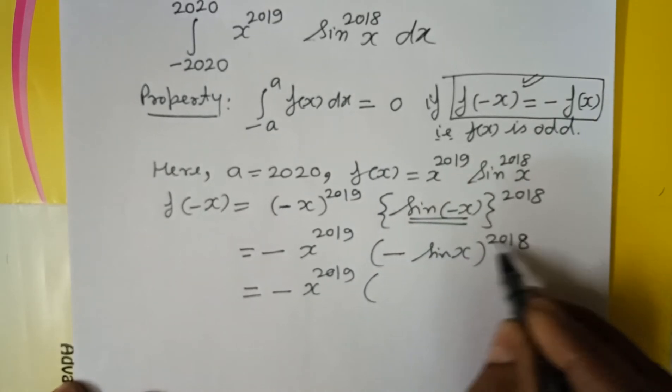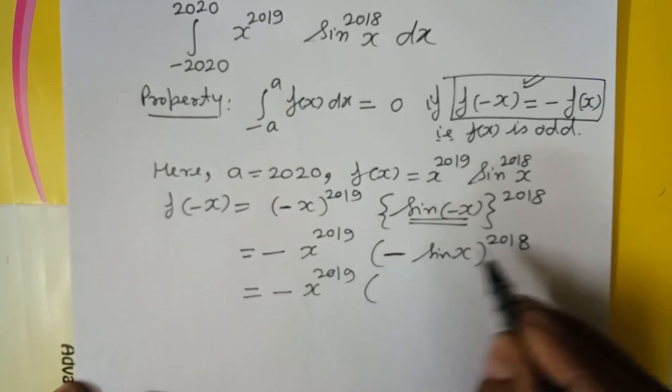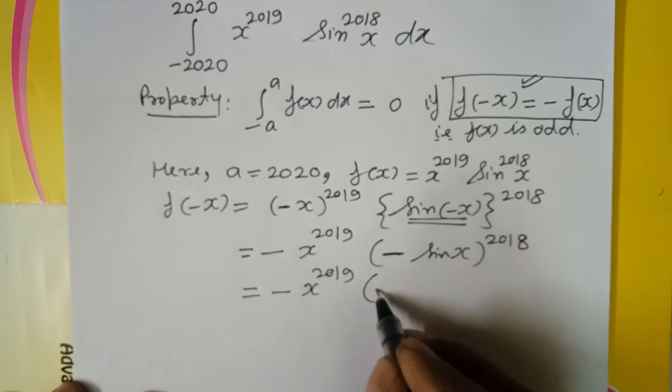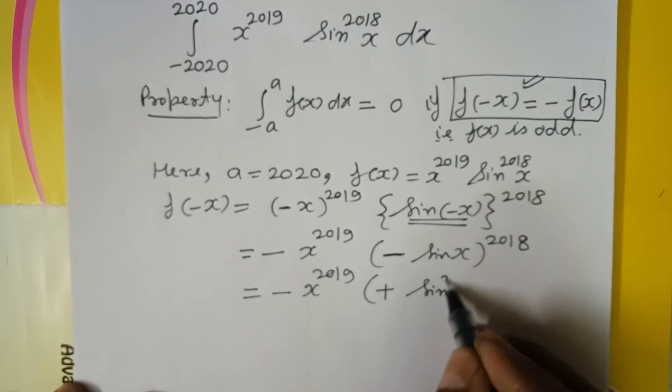This gives minus x to the power 2019. Minus to an even power, minus to an even power becomes plus. So this becomes plus sin to the power 2018 x.